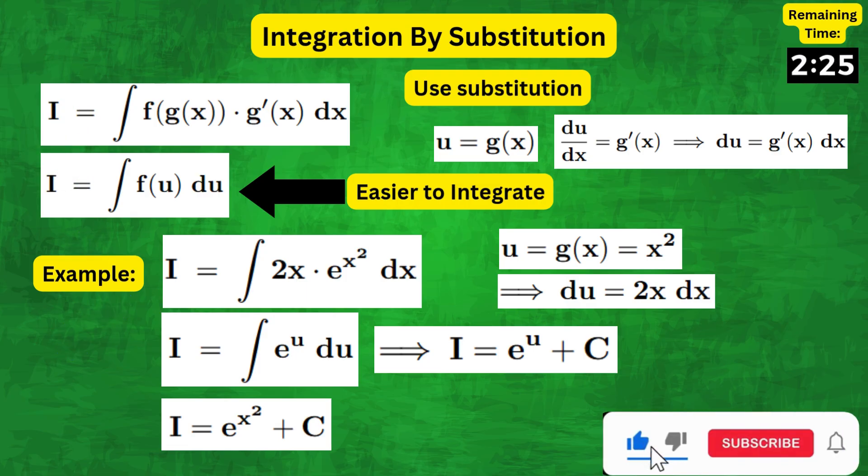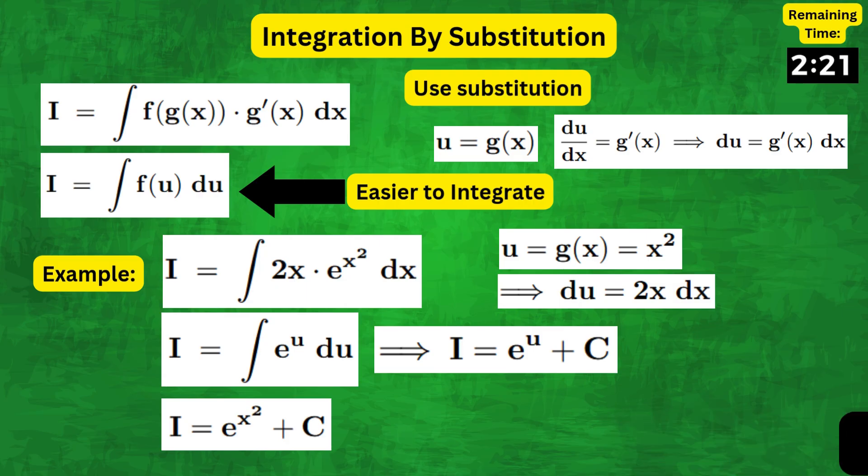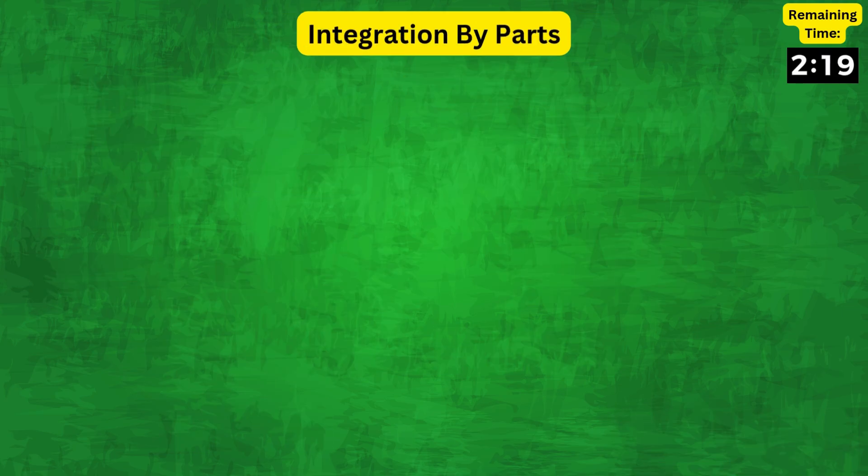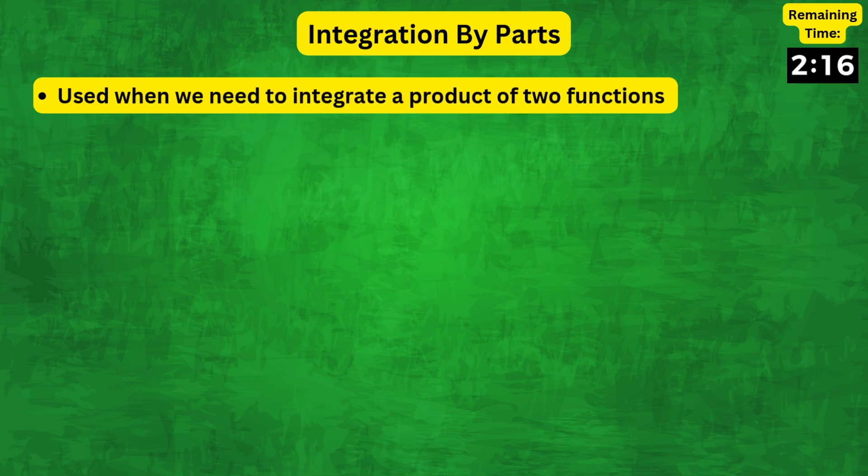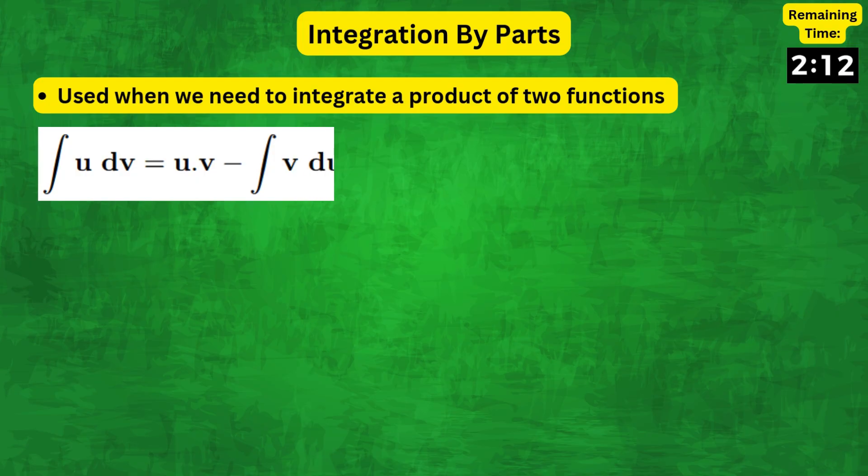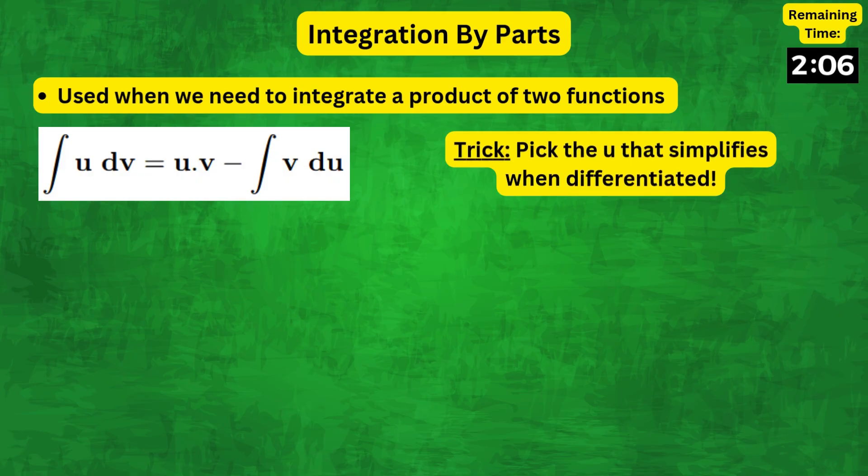Please keep watching as the next technique is a game changer for products of two functions, namely integration by parts. It helps when you're dealing with products of two functions, the form integral of u times dv, which equals uv minus integral of v du. Now, the trick with this one is to always pick the u that simplifies when differentiated.